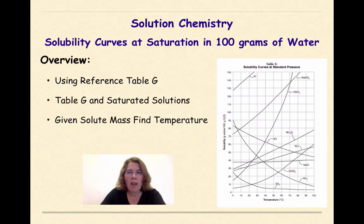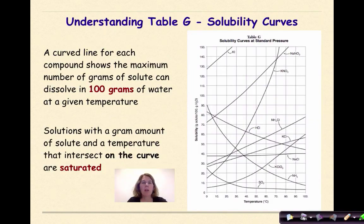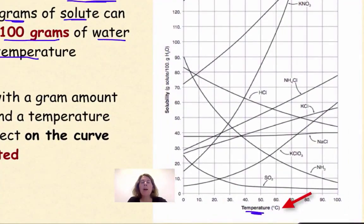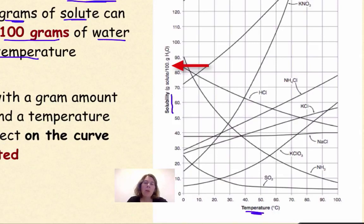Given solute mass, finding the temperature. And finally, given temperature, finding solute mass. Understanding table G and solubility curves: a curved line for each compound shows the maximum number of grams of solute that can dissolve in 100 grams of water at a given temperature. On the bottom we have temperature in degrees Celsius, ranging from 0 to 100. On the Y-axis, we have solubility of your solute — the thing you are dissolving — which in this case is water, because this says grams of solute per 100 grams of water. That 100 grams of water is really important to notice.